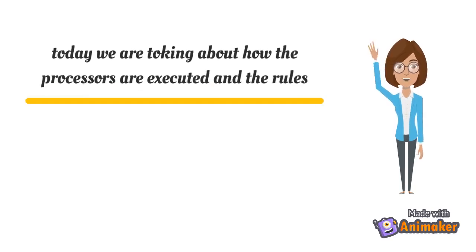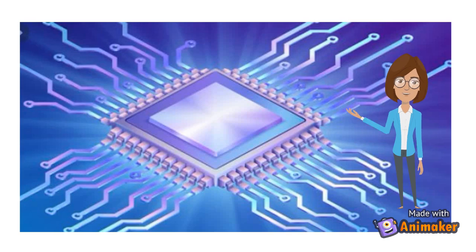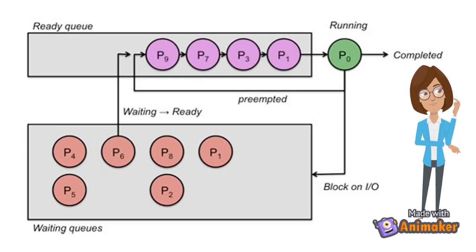Today we are talking about how processors execute and the rules they follow. The CPU schedulers are used to schedule various processes that are coming for execution by the CPU. The scheduler works to ensure that performance is not hindered and that processes run according to a set of rules and policies.